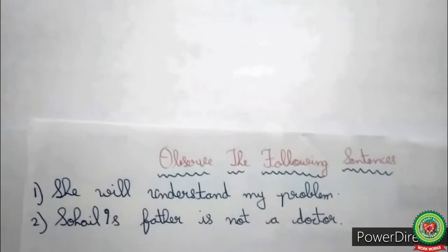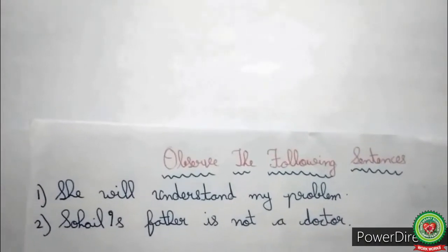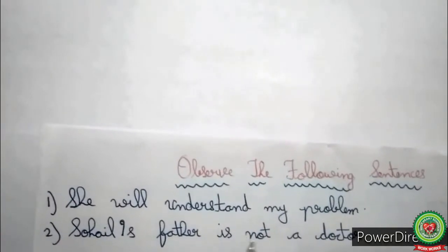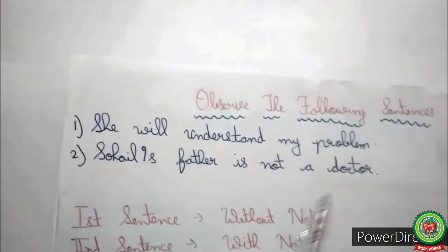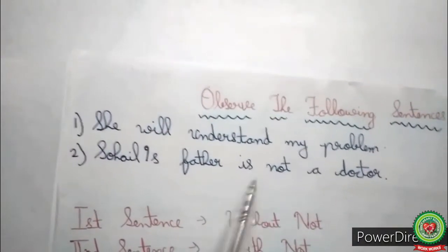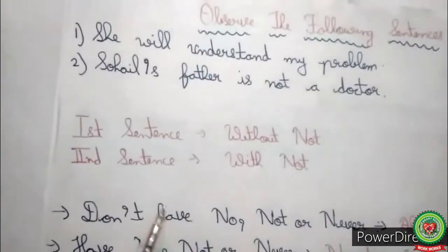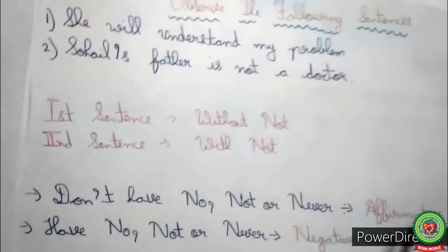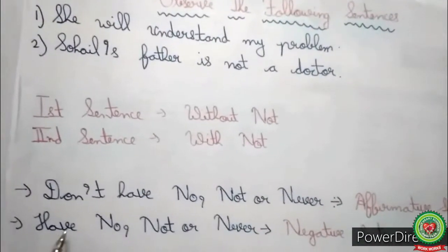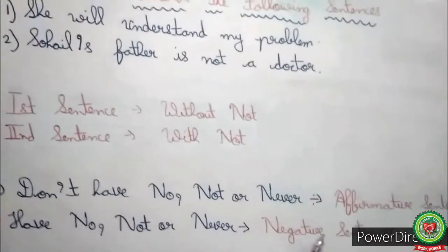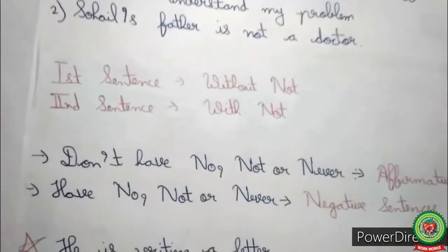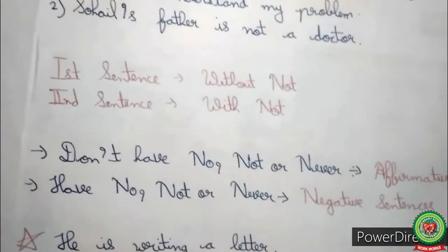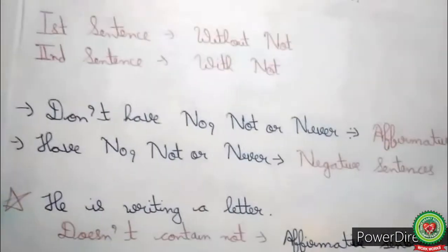Before proceeding further, let's refresh what is an affirmative sentence and a negative sentence. Observe the following sentences: 'She will understand my problem' and 'His father is not a doctor.' The first sentence is without 'not' and the second sentence is with 'not.' So the sentences that don't have 'no,' 'not,' or 'never' in them are affirmative sentences, and the sentences that have 'no,' 'not,' or 'never' in them are negative sentences.